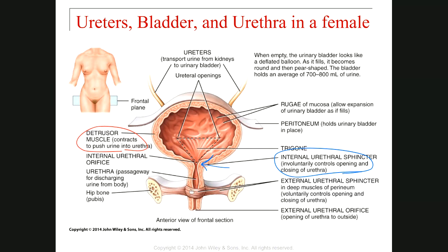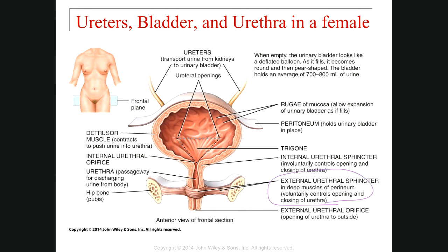The urethra has one part located inside the body and one part outside the body. When the urethra passes through the wall of the body, there is another valve called the external urethral sphincter, which controls the opening and closing under our voluntary control. During potty training, we teach children how to control this sphincter to do urination.